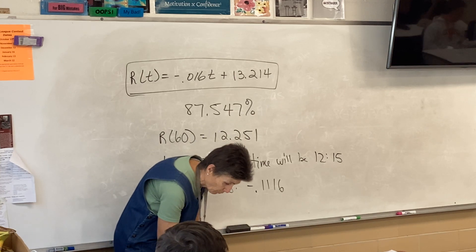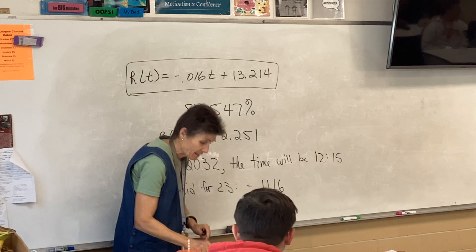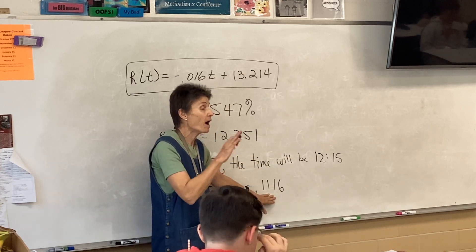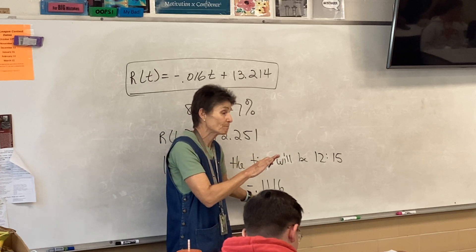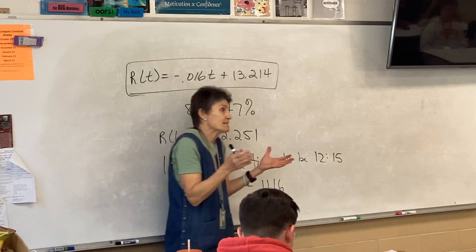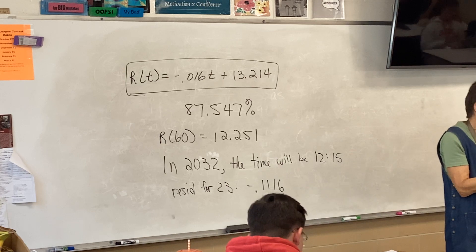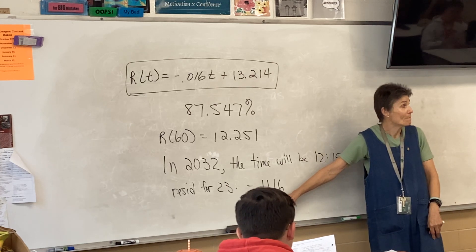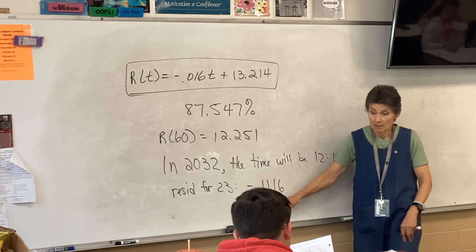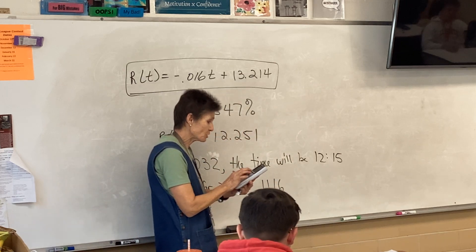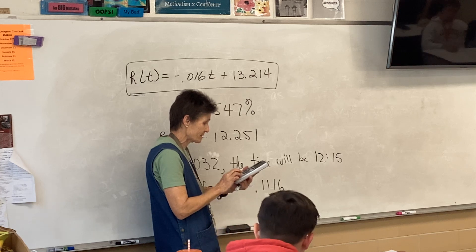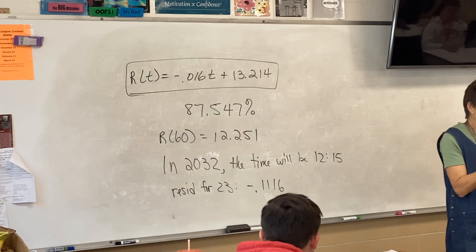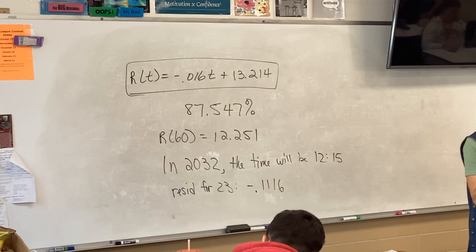So, what does that mean? Now, I have to agree. I have been a little remiss. Because all I've been asking you for is... What does a negative residual mean? The model over predicted, right? So, the time the model predicts is higher than the actual time, right? So, that explains it a little bit. The actual time is less than the model predicts. The actual time is 0.1116 minutes less than the model predicts.